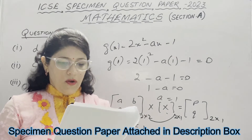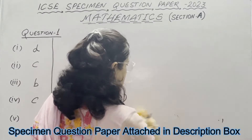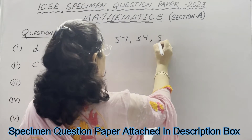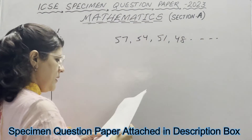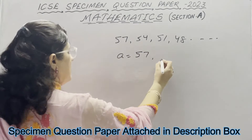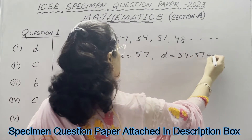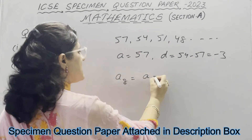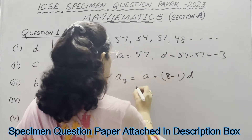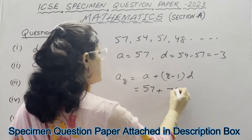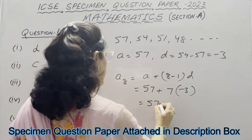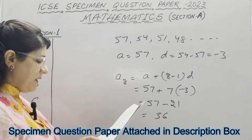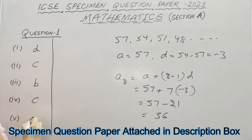In Part 5, the sequence 57, 54, 51 and 48 are in AP. The first term A is 57, and the common difference D is 54 minus 57 equals minus 3. We need to calculate the 8th term using the formula A plus (N minus 1)D: 57 plus 7 times minus 3 equals 57 minus 21, which equals 36. The correct option is A.